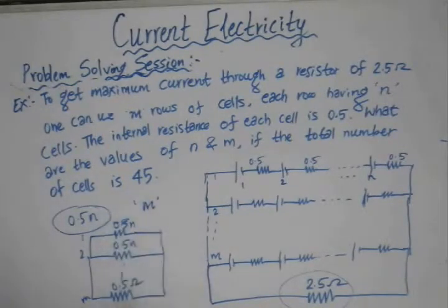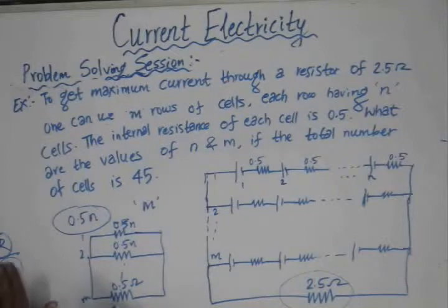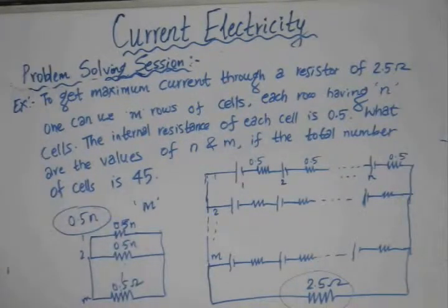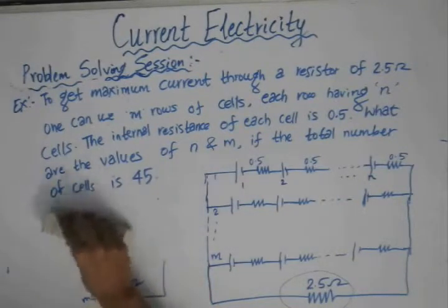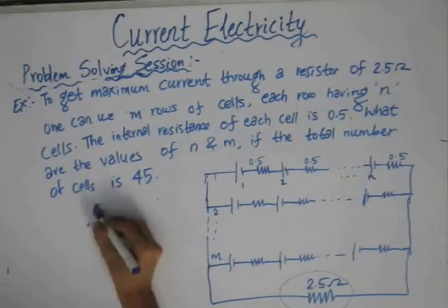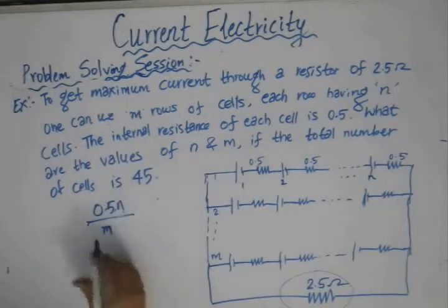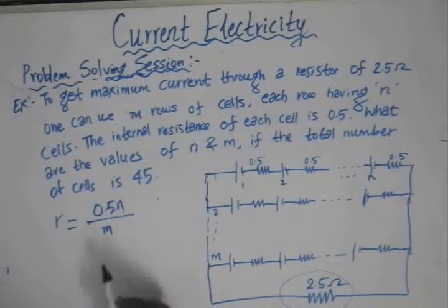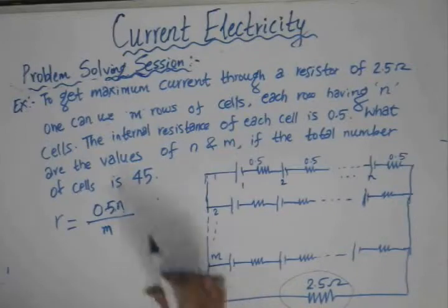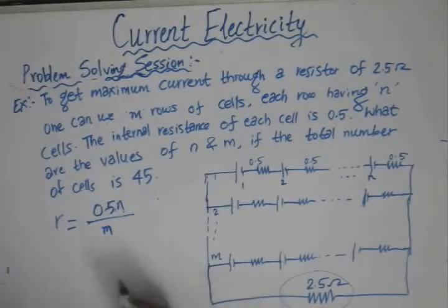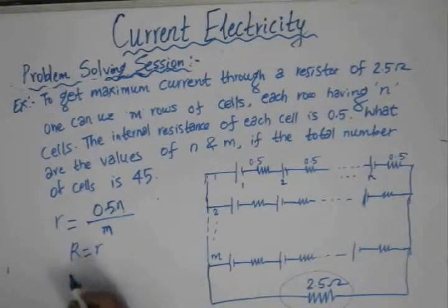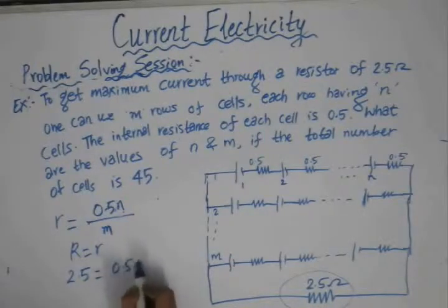For identical resistors connected in parallel, the equivalent resistance is the individual resistor value divided by the number of branches. In our case, the number of branches is M, and the value of each individual branch resistance is 0.5N. So the total internal resistance for the combination is 0.5N divided by M. For maximum current, we set this equal to the external resistance: 2.5 = 0.5N / M, giving us N/M = 5. This is equation number one.